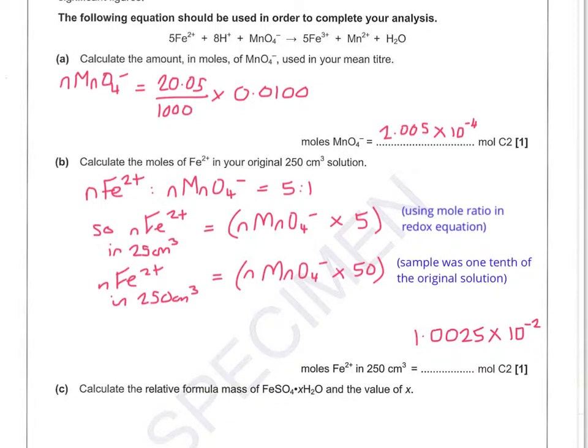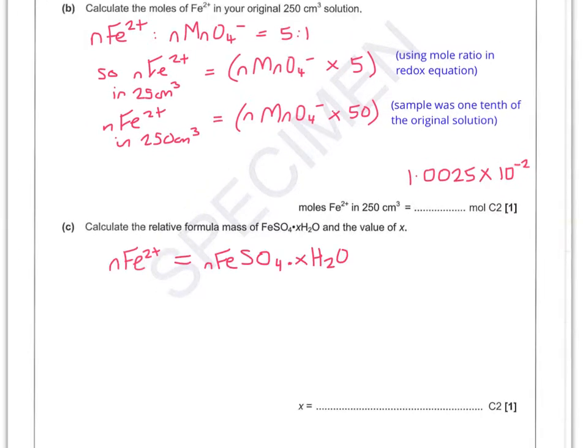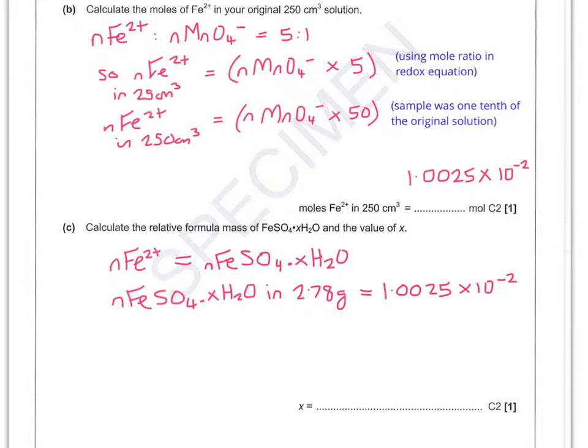So the next thing to do is to calculate the relative formula mass of our hydrated iron sulfate sample and from that we can work out the value of x. So starting off by noticing that the number of moles of Fe²⁺ is going to equal the number of moles of your anhydrous salt. You can then say that the number of moles of anhydrous salt that you've got is also 1.0025 times 10 to the minus 2. Now remembering also that our original sample was 2.78 grams, we can work out that the number of moles of your hydrated salt in that sample was also 1.0025 times 10 to the minus 2.